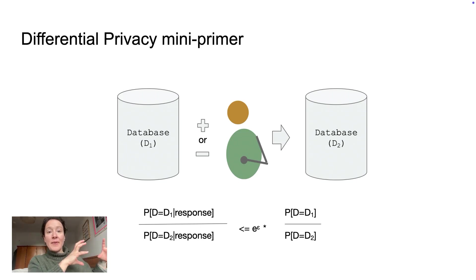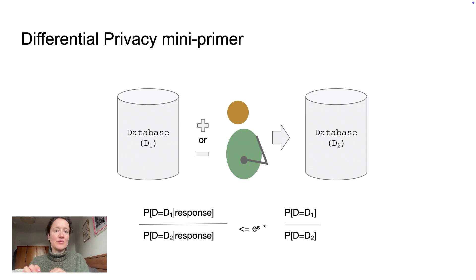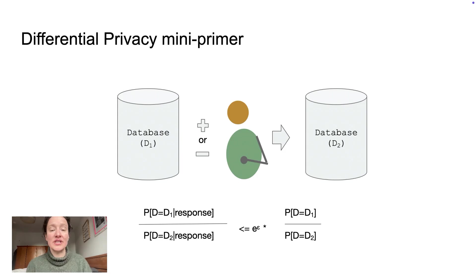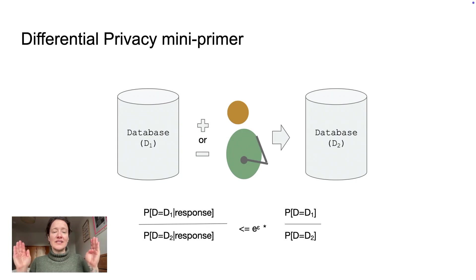So the amount of information by which I can update my posterior based on the response should be less than or equal to e to the epsilon times the actual probability of those two changes — which could be a constant or at least a normalized term. When we think through this, we're basically trying to make it almost imperceptible that somebody has been added or removed, because this provides great privacy guarantees.